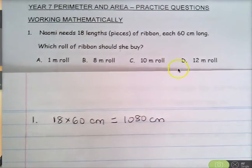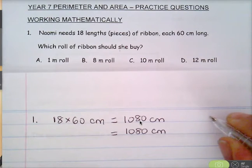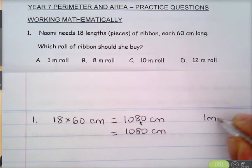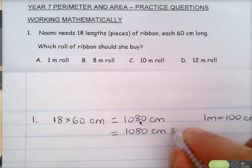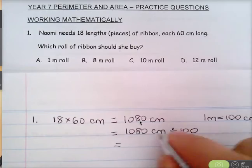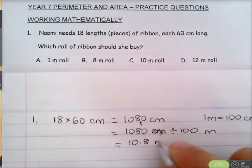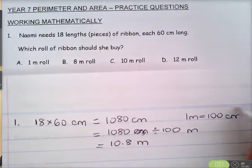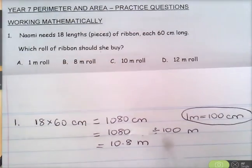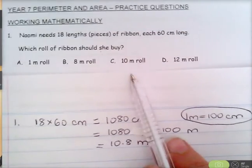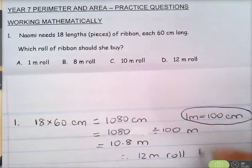All the answers are in meters, so we need to convert 1080 centimeters to meters. Since one meter is 100 centimeters, we divide by 100: 1080 ÷ 100 = 10.8 meters. The 10-meter roll won't be enough, so she needs the 12-meter roll. The answer is D.